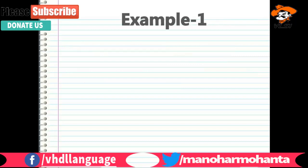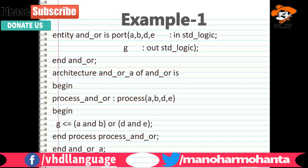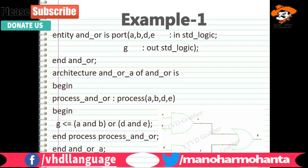Let us see one example with a single process statement. In this code, an AND operation is done with signals a and b, and d and e, to get a g output. There is only one process here, and it will execute statements sequentially — first this statement executes, then the next, and so on until you get g. The circuit-level diagram shows an AND gate for a and b giving c, and for d and e giving f, and then combining to get g.